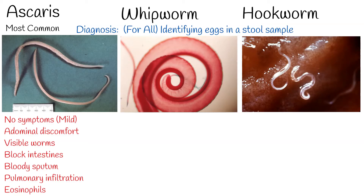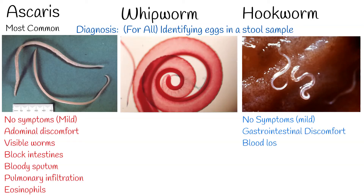Hookworm infection: most people infected with hookworms have no symptoms. Some have gastrointestinal symptoms, especially persons who are infected for the first time. The most serious effects of hookworm infection are blood loss due to intestinal infection, leading to anemia, in addition to protein loss. The standard method for diagnosing hookworm is by identifying hookworm eggs in a stool sample using a microscope.